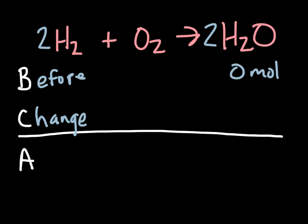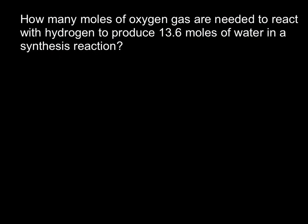The after row is what we end up with when we're all done. After the reaction stops we should have some product, and we're probably going to have one of the reactants that ran out, while the other may be an excess reactant. So let's jump right into a BCA table: how many moles of oxygen gas are needed to react with hydrogen to produce 13.6 moles of water in a synthesis reaction?